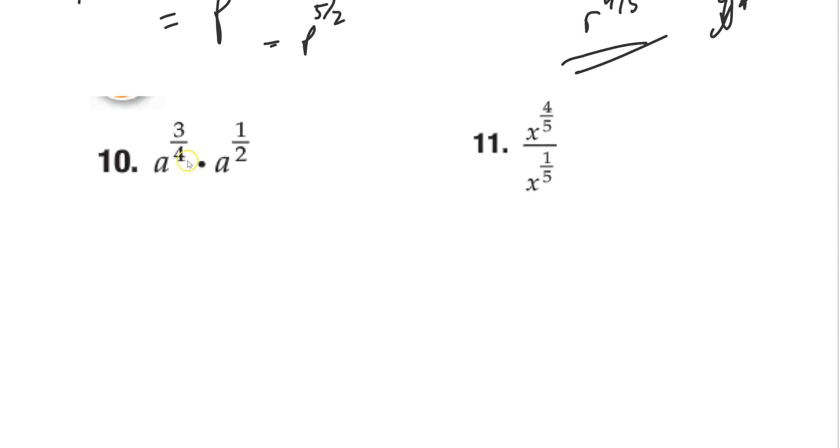Same thing here. I've got to say the same base. I've got to add the powers. A to the 3 fourths plus 1 half. Oh, you've got to add a common denominator. You've got to add fractions. And then when you add fractions, all you do is find a common denominator. In this case, it's 4. So A to the 3 fourths plus multiplied by 2, 2 fourths. And you get A to the 5 fourths. Right? Just adding fractions like normal. Good old days.